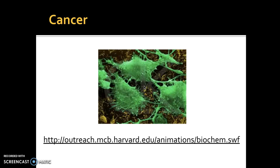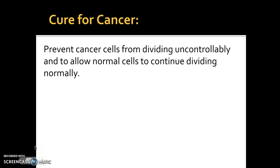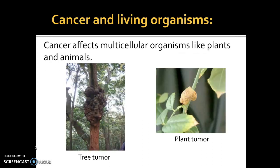There's a video and animation you can watch later to learn more about that, and we're going to do a webquest on cancer as well. As human beings and animals, we're trying to find a cure for cancer to prevent these cells from growing uncontrollably. To do that, we have to stop the cell cycle in some cells without interfering with healthy cells. Many drugs today fight off bad cells but also kill our good healthy cells at the same time. This can happen in plants and animals. Thank you everybody.